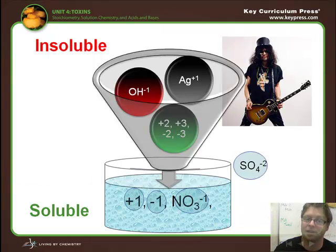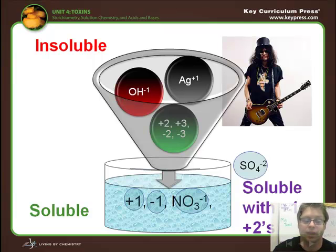Things that are soluble include +1 and -1 charges, nitrates, and sulfates. SO4^2- (sulfates) are soluble with +1 and +2 ions, but not with +3. So sulfates are another thing that are sometimes soluble and sometimes insoluble—they tend to be soluble most of the time.